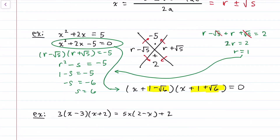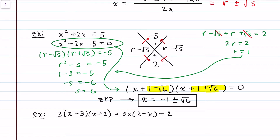Using the zero product property, x equals negative 1 + √6 and negative 1 - √6, which we can write as negative 1 ± √6. This is exactly what you'd get from the quadratic formula, but presented in a more factor-friendly way. This makes a nice transition to the quadratic formula if you prefer factoring. From an instructor's standpoint though, since this isn't usually taught, it might look a little sketchy on an exam — so keep that in mind as a student.